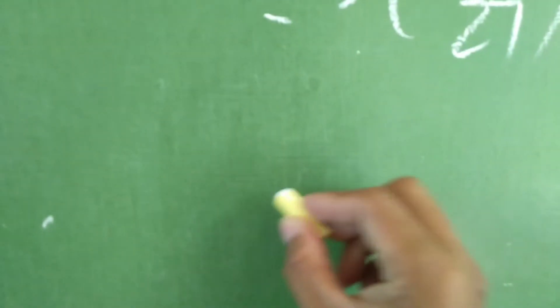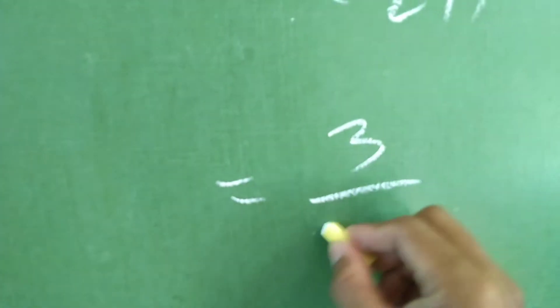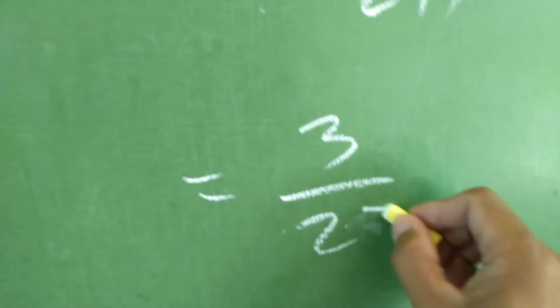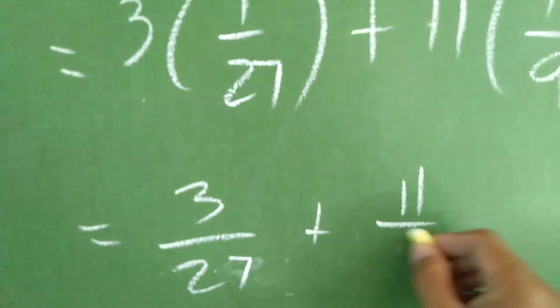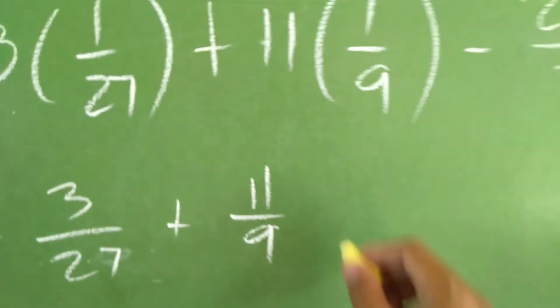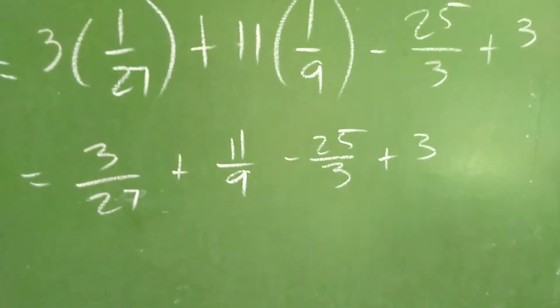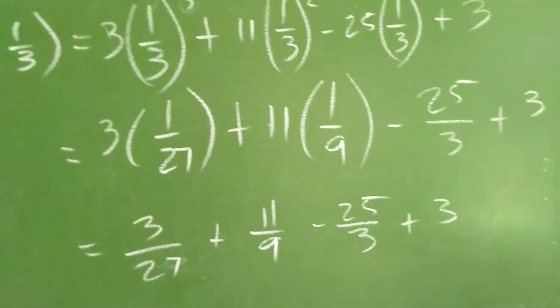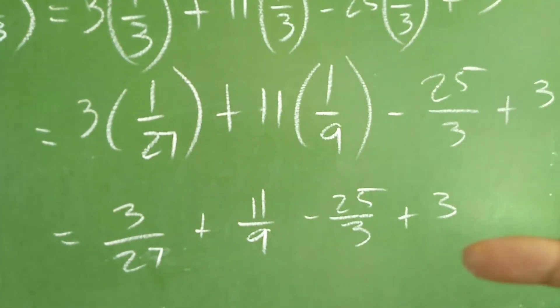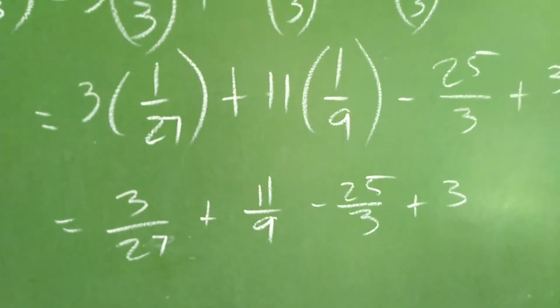Let's simplify. So, we have 3 over 27 plus 11 over 9 minus 25 over 3 plus 3. Tignan nyo mabuti yung nasa upper nya, yung part na ito.